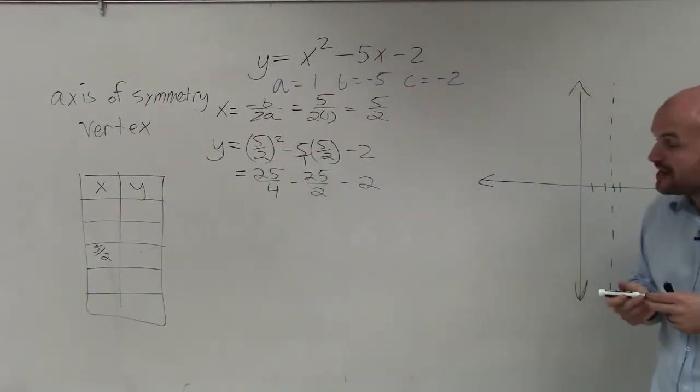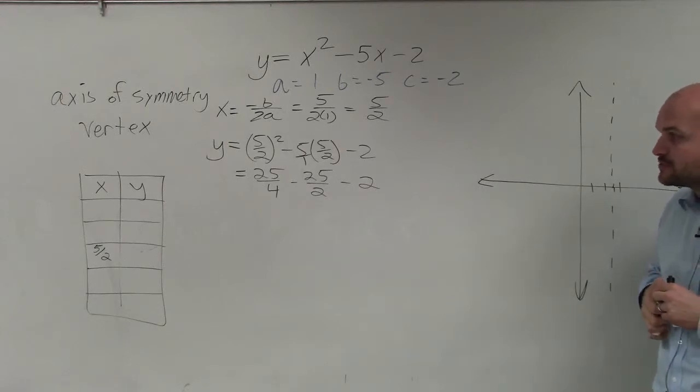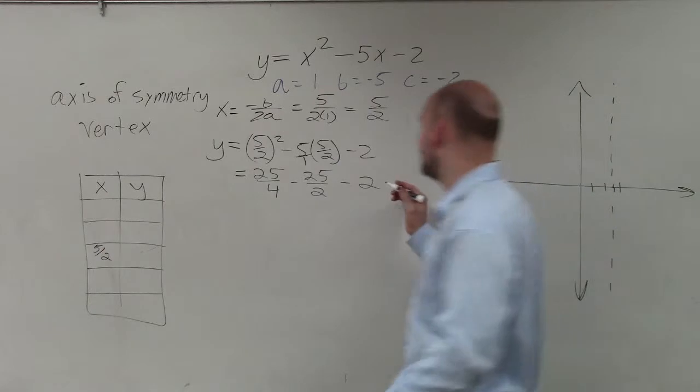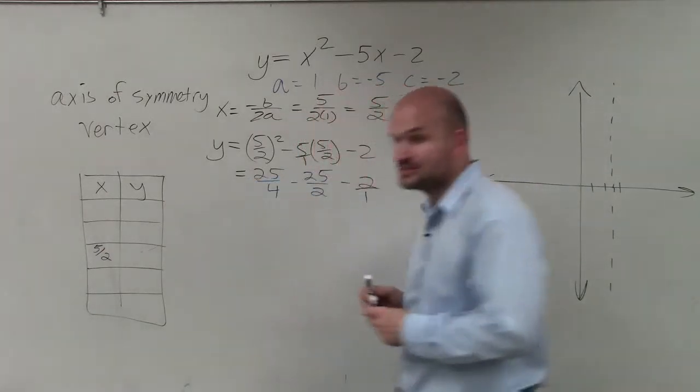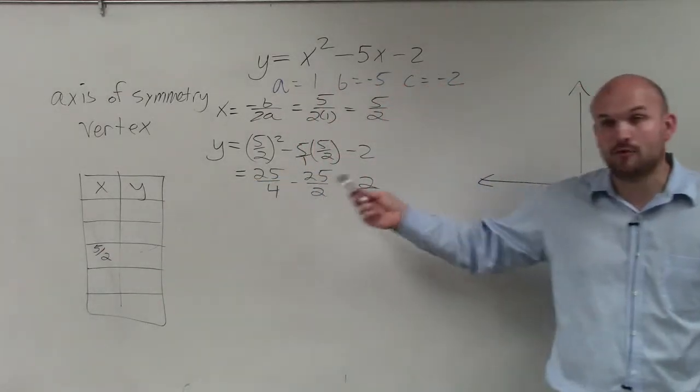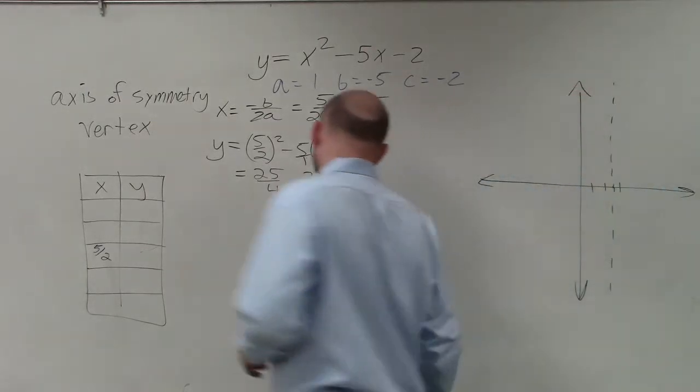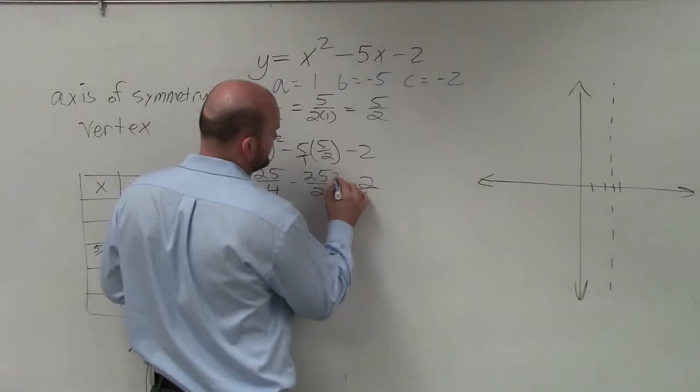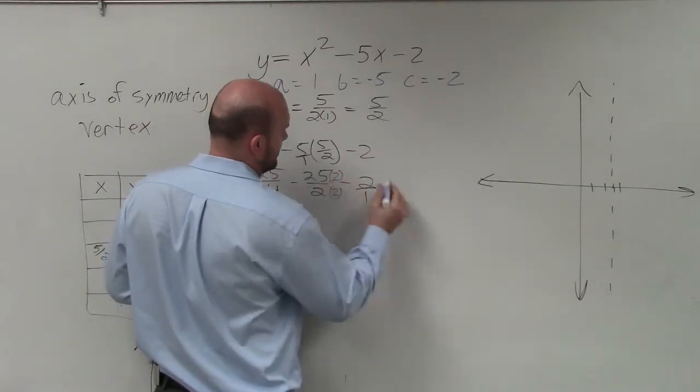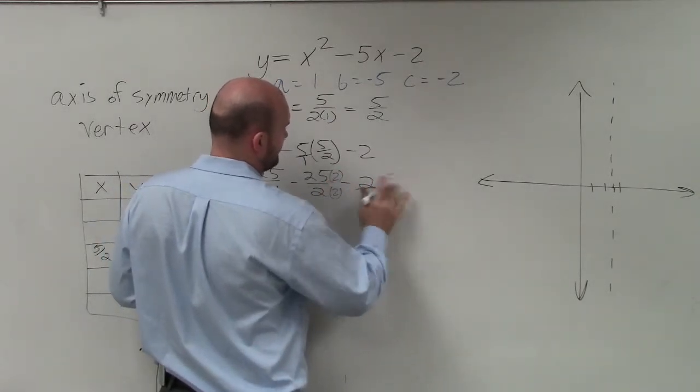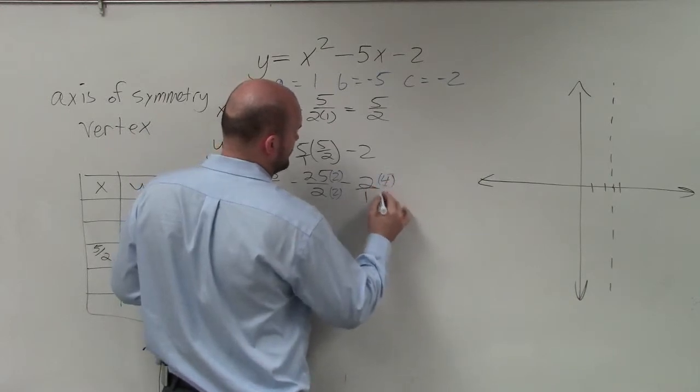So now it comes into a problem, though. We have this expression 25 fourths minus 25 halves minus 2. How do we go ahead and do that? Well, remember, when adding and subtracting fractions, they all have to have the same denominator. So here, I have 4, 2, and 1 as denominators. My common denominator is going to be 4. So I'm going to need to multiply this by 2 over 2, and this one by 4 over 4.